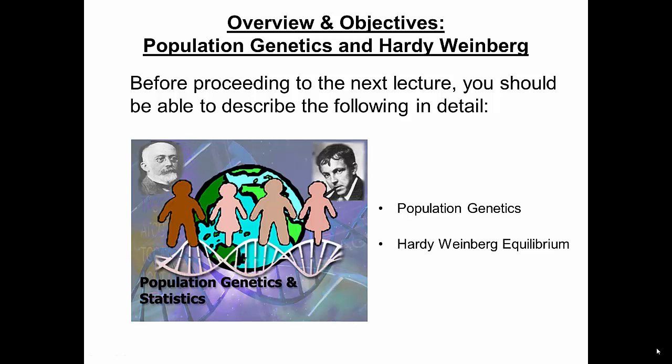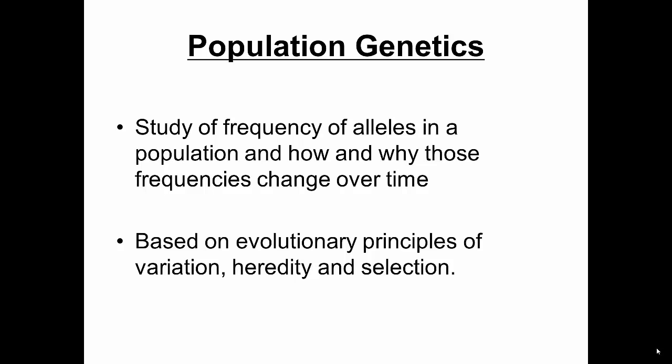In today's lecture we're going to be talking about population genetics. We want to define what population genetics is, the principles behind it, and how it works. We also want to describe Hardy-Weinberg equilibrium, which is a main tool used to study population genetics. Population genetics is defined as the study of the frequency of alleles in a population and how and why those frequencies change over time. It's based on evolutionary principles of variation, heredity, and selection.